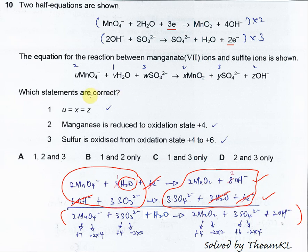Which statements are correct? u equal to x equal to z. U is what? U from this is 2. x is the mole of MnO2, so it's 2. So this one is 2.